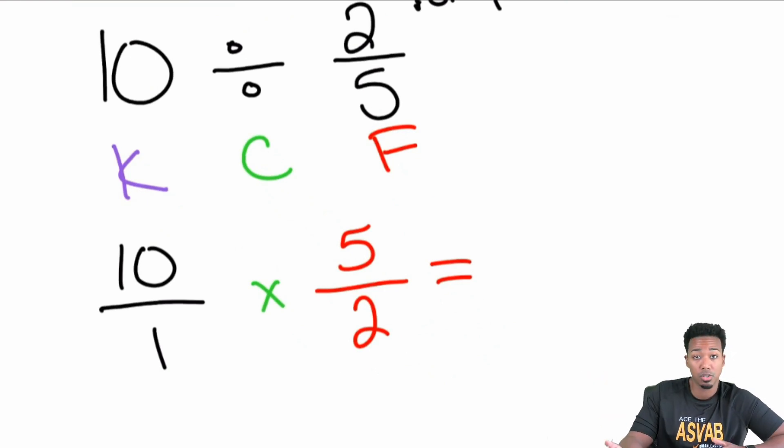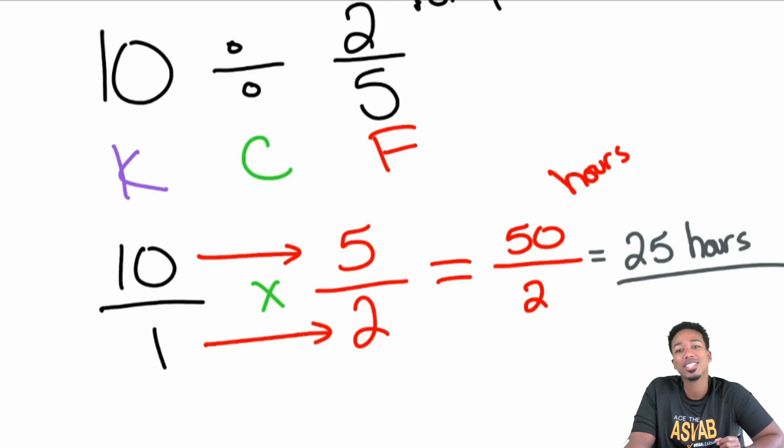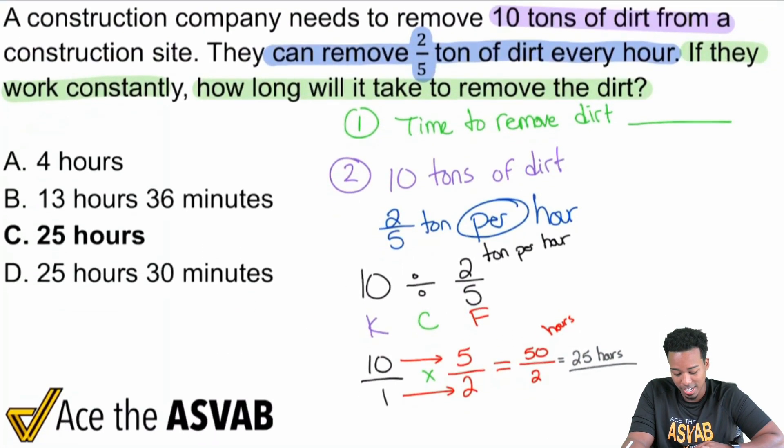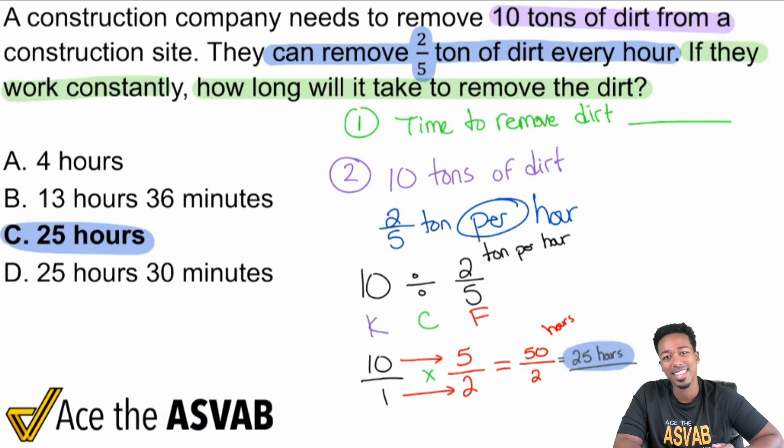Let me zoom in a little bit. What we're gonna do here is 10 multiplied by 5 is 50, 1 multiplied by 2 is 2. That's how many hours we're gonna have, but I think we can simplify a little bit here because 50 divided by 2, that's gonna be 25. And so 25 hours, that is the time that it'll take to get this dirt removed from the construction site. C is the answer, 25 hours, and I'll see you in the next video.